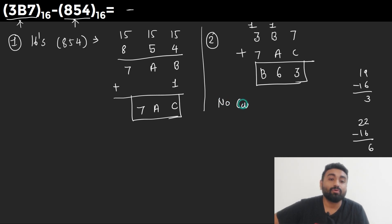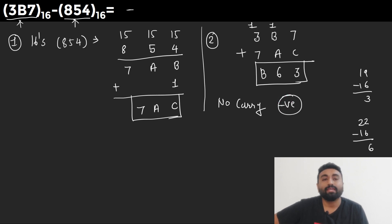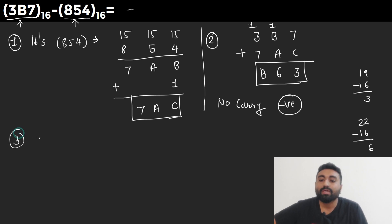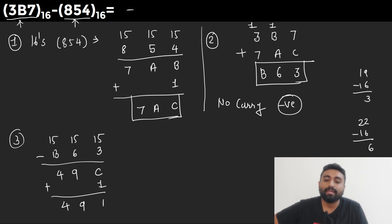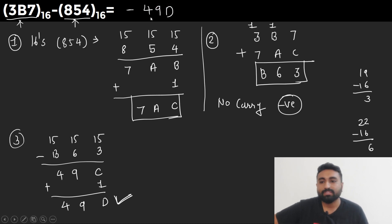The result is B63, but we do not have a carry — no carry means the answer is negative. So we find the 16's complement of B63. First, the 15's complement: 15 minus 3 is 12 (C), 15 minus 6 is 9, 15 minus B is 4 — giving 49C. Adding 1 gives 49D. So the answer is 49D.